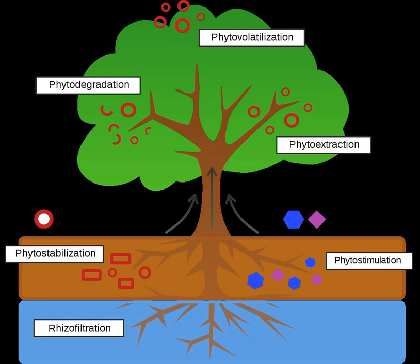Rhizofiltration is a process that filters water through a mass of roots to remove toxic substances or excess nutrients. The pollutants remain absorbed in or adsorbed to the roots. This process is often used to clean up contaminated groundwater through planting directly in the contaminated site or through removing the contaminated water and providing it to these plants in an off-site location. In either case, typically plants are first grown in a greenhouse under precise conditions.